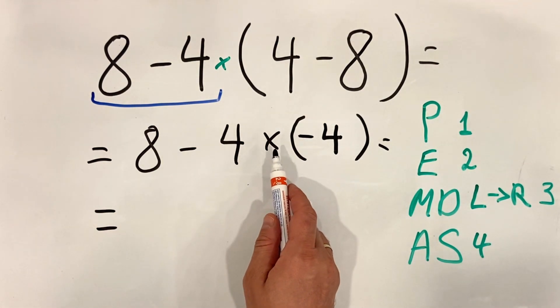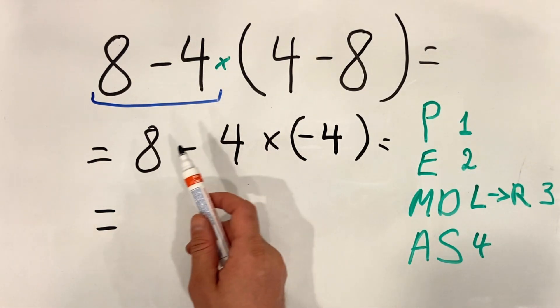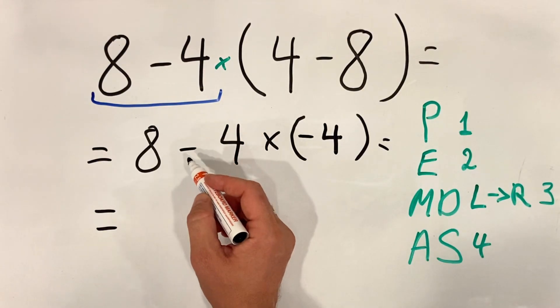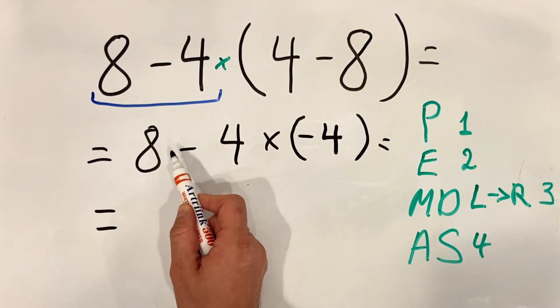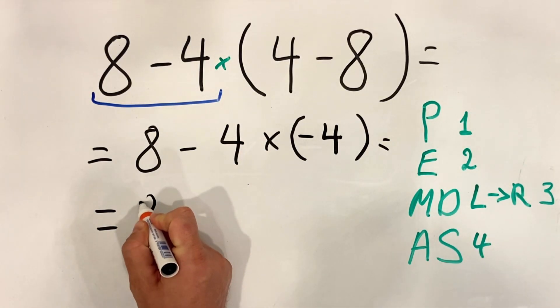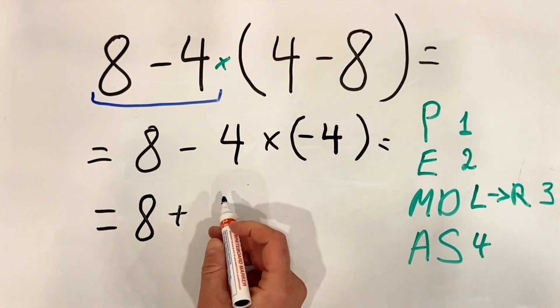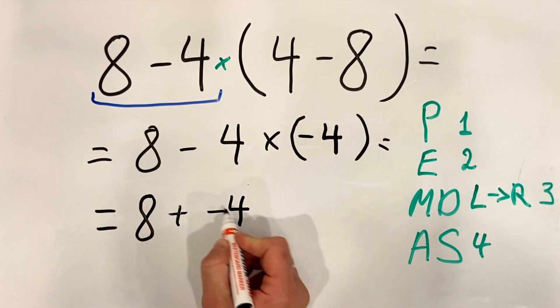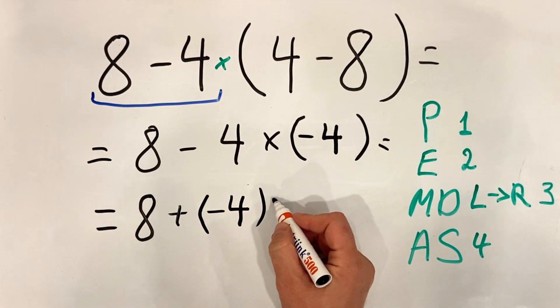Now we must do multiplication. So to understand easier, the minus four we will write it as plus minus four, so then you're not confused by the signs. So we get eight plus minus four in parenthesis multiply...